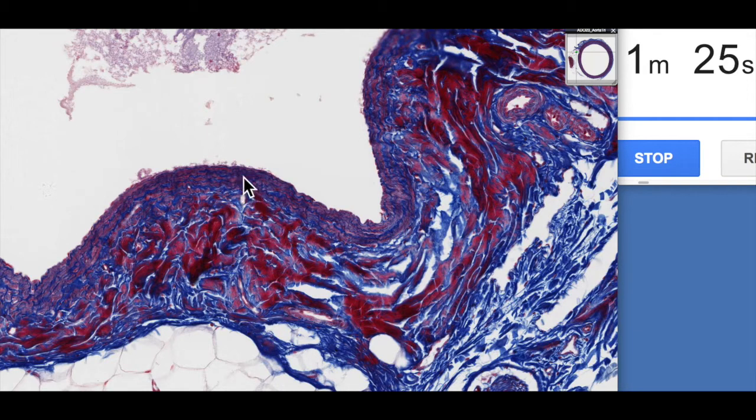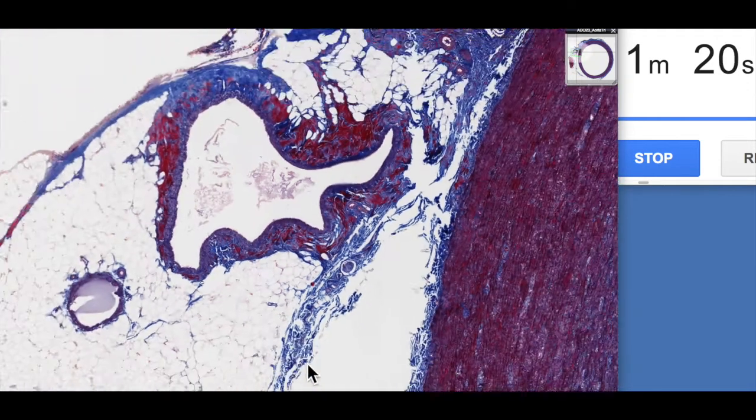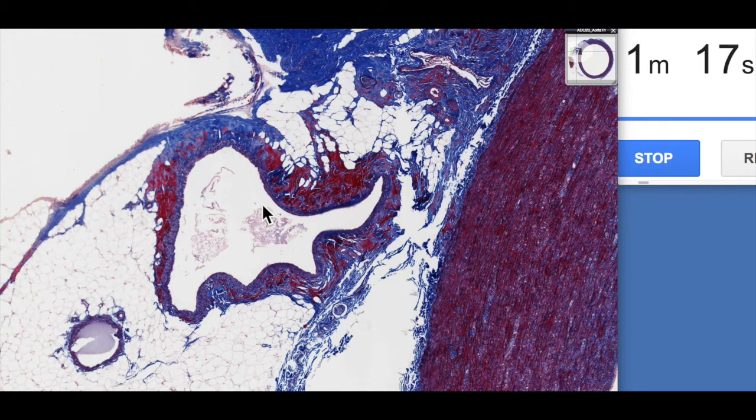So we've got the intima, the media, and then the adventitia. If we have a look at the major features of it, you can see it's very irregularly shaped, but very typical of a vein there.